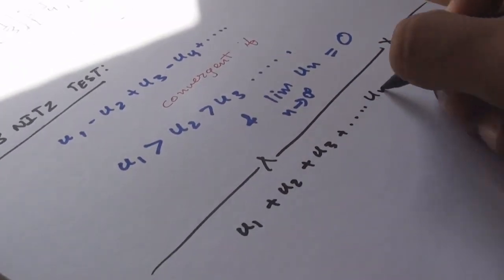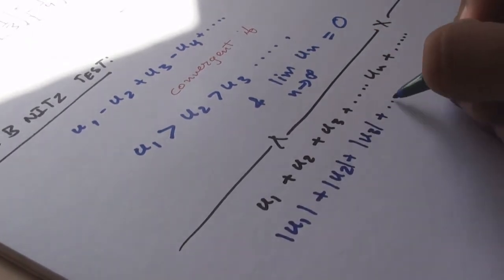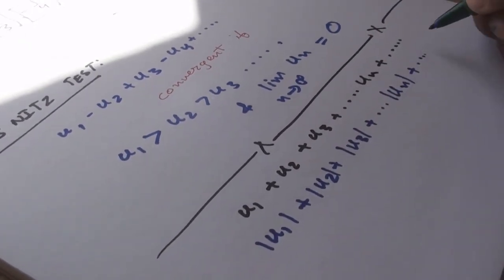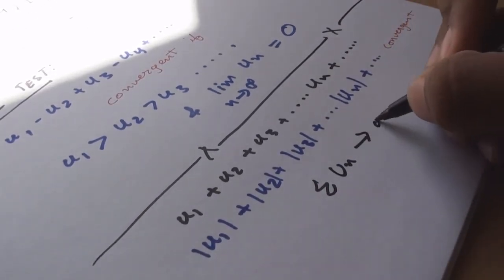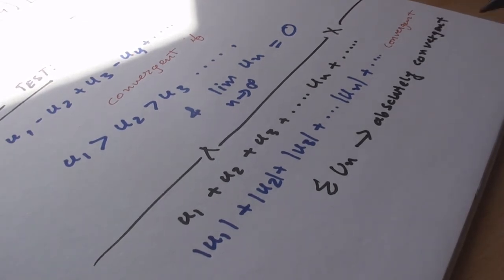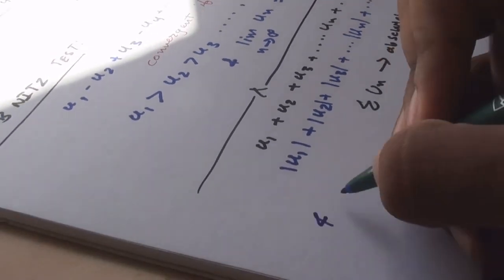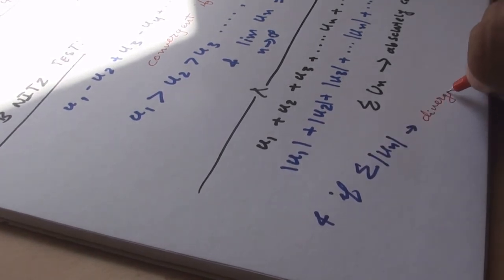If a series of arbitrary terms u1 + u2 + u3 + un and so on is such that the series |u1| + |u2| + |u3| + |un| and so on is convergent, then the series un is said to be absolutely convergent. And in the case where the series Σ|un| is divergent but the series un is convergent, then the series un is said to be conditionally convergent.